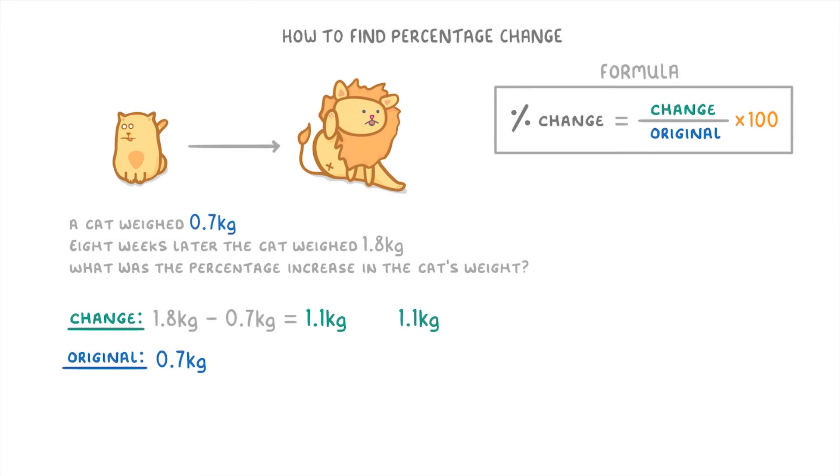So for our working, we do 1.1, divided by 0.7, times 100. Which, when rounded to a whole number, is 157%. So the cat's grown by 157% in the 8 weeks.